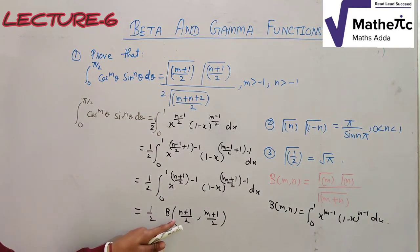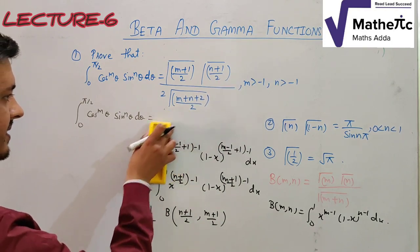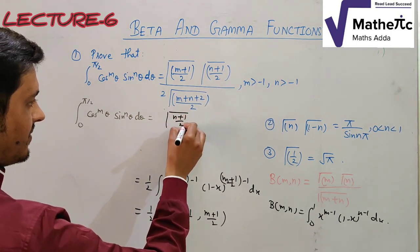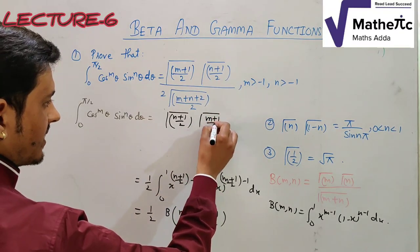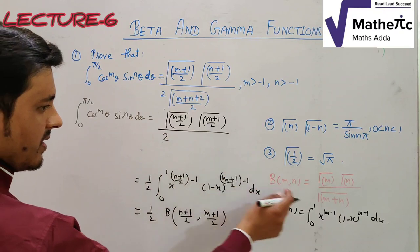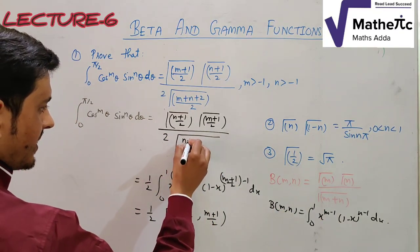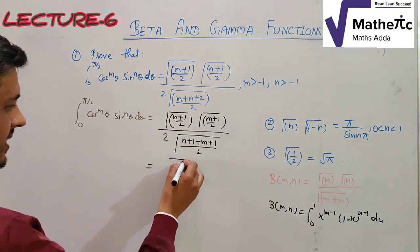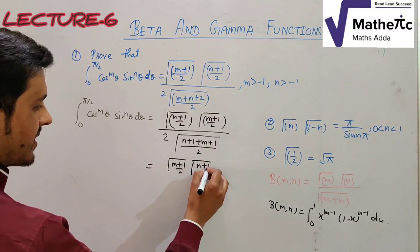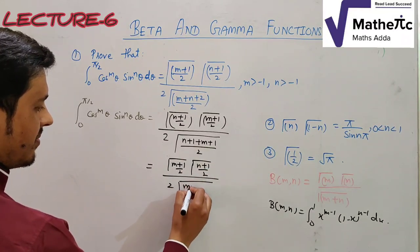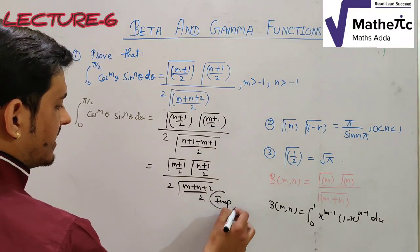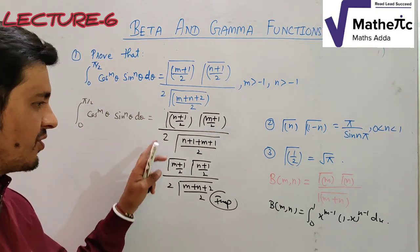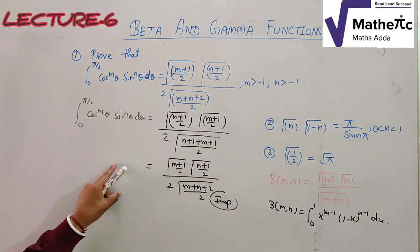Now we apply the beta function formula β(m,n) = Γ(m)·Γ(n)/Γ(m+n). Substituting, β((n+1)/2, (m+1)/2) = Γ((n+1)/2)·Γ((m+1)/2) / Γ((n+1)/2 + (m+1)/2). Therefore the final result is: ∫₀^(π/2) cosᵐθ sinⁿθ dθ = Γ((m+1)/2)·Γ((n+1)/2) / [2·Γ((m+n+2)/2)]. This is an important result.